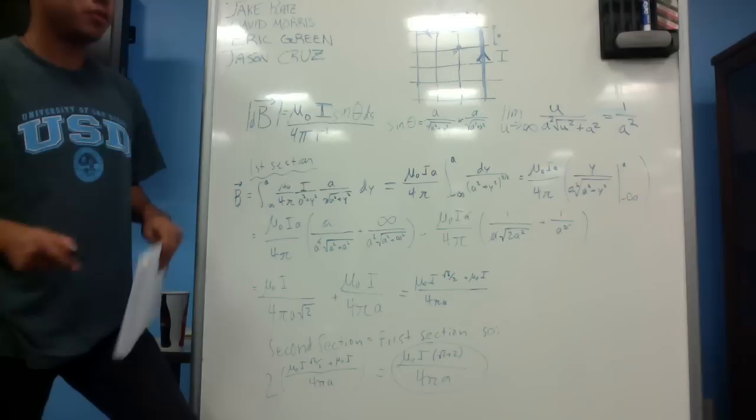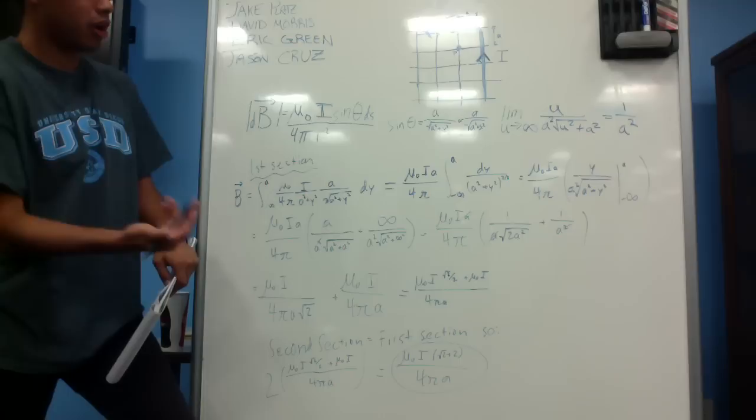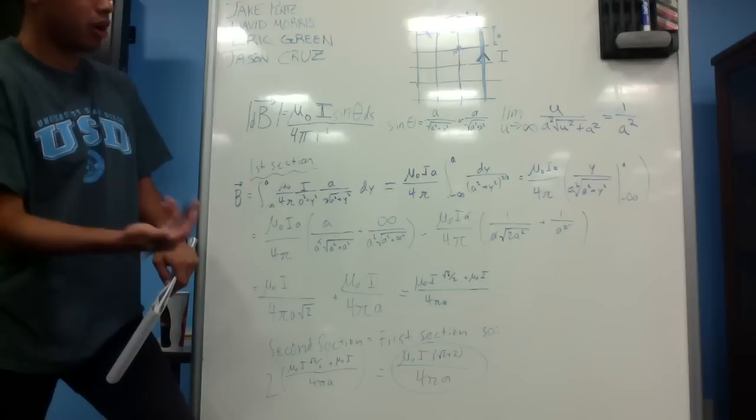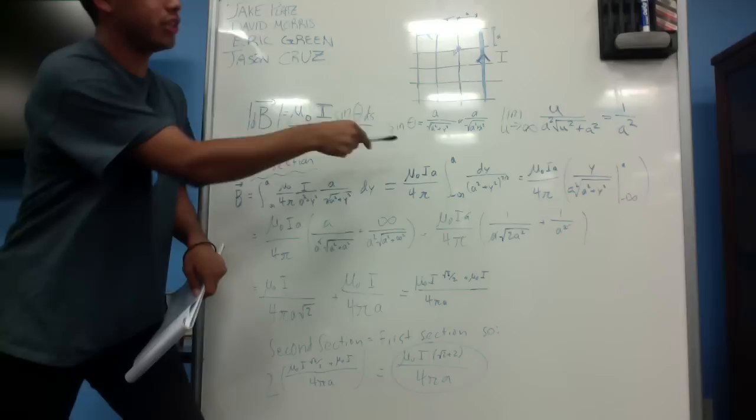So starting off, we started with the basic Biot-Savart law, which gives us a constant mu naught over 4 pi times i times sine theta ds over r squared. And before we went on to do the actual math for this problem, we substituted several variables in. So for example, for sine theta,